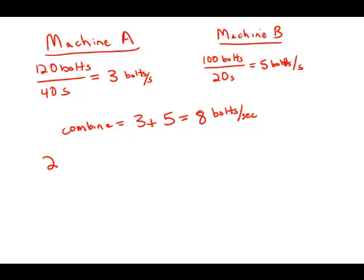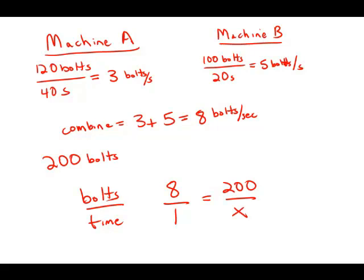So now we want to know how long it will take to produce 200 bolts when they're working together at 8 bolts per second. So we're going to set up a proportion, bolts over time. And we know that if we do 8 bolts in one second, then how many seconds would it take to do 200? Well, I'm just going to cross multiply these fractions. 8x equals 200, and then divide both sides by 8. X equals 25. It would take 25 seconds for them working together to produce 200 bolts.